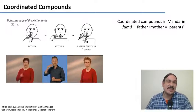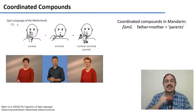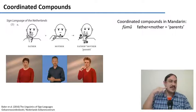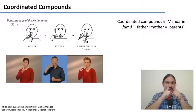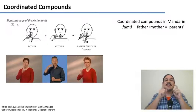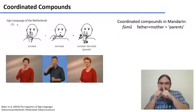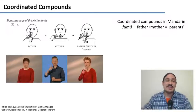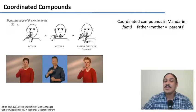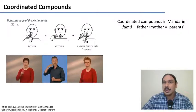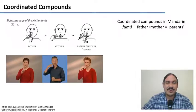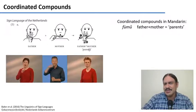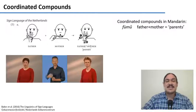You might notice several things. First of all, the sign for 'parents' is done a little bit faster — both components are reduced in their duration so that 'father' in the compound is slightly faster than 'father' as a free root. The second thing you can notice is that this compound is slightly different from the ones you've seen before. We call it a coordinated compound because both words could be the head. Father is a kind of parent, but mother is also a kind of parent.